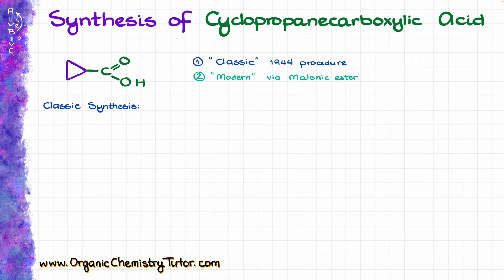The classic synthesis of cyclopropane carboxylic acid, as described in the 1944 publication in Organic Synthesis, starts by treating a nitrile with a concentrated solution of sodium hydroxide and high heat. The original article takes the solid sodium hydroxide and adds the liquid nitrile on top of it — the reaction is done neat, without any solvent. There are also versions in the literature that use a little bit of water as solvent, so you can do this reaction either neat or in the presence of a solvent.